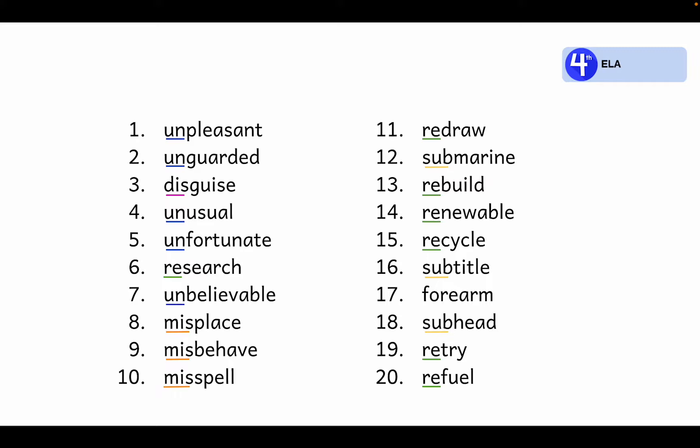Our last word is forearm. What is the prefix in the word forearm? It is f-o-r-e, for. For means earlier or before. A forearm is the section that comes before the arm.